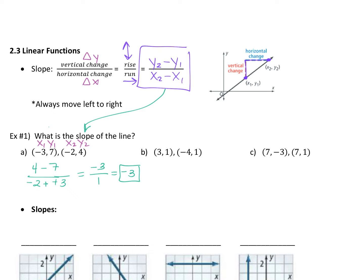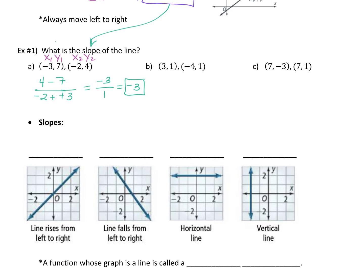Find the slope of the next two lines. Label them x1 y1 and x2 y2, whatever makes the most sense to you, then find that slope and tell your neighbor what you got for both of them. If we plug this in — y2 minus y1 over x2 minus x1 — that's 0 over negative 7. What's 0 divided by anything? Zero. So that is a slope of 0, and that's fine.